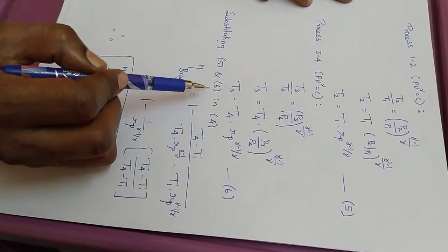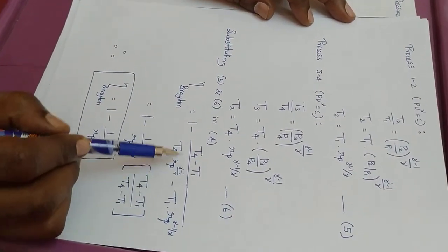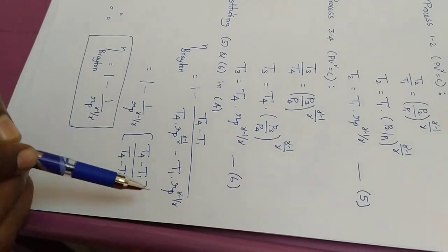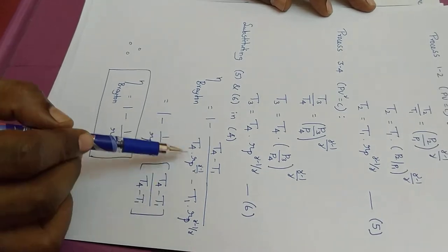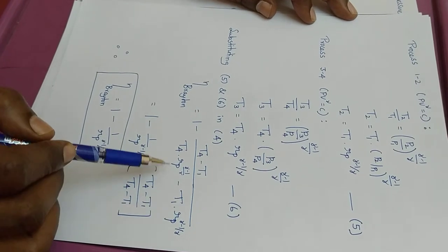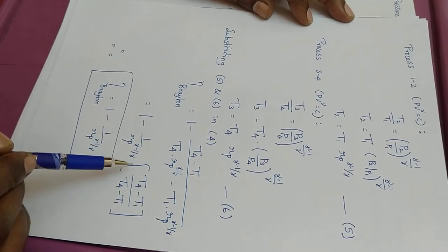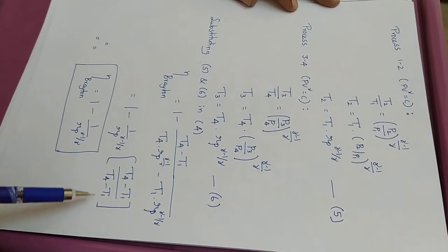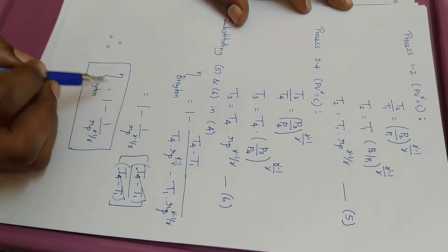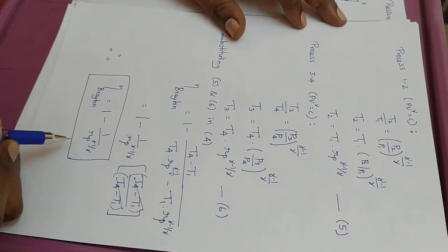When we substitute equations 5 and 6 into equation 4, we get efficiency of Brayton cycle as 1 minus (T4 minus T1) divided by [T4·Rp^((gamma-1)/gamma) minus T1·Rp^((gamma-1)/gamma)]. Since Rp^((gamma-1)/gamma) is common in the denominator, taking it outside gives 1 minus (1 by Rp^((gamma-1)/gamma)) times (T4 minus T1) by (T4 minus T1). These cancel, so the final efficiency of Brayton cycle is equal to 1 minus 1 by Rp^((gamma-1)/gamma).